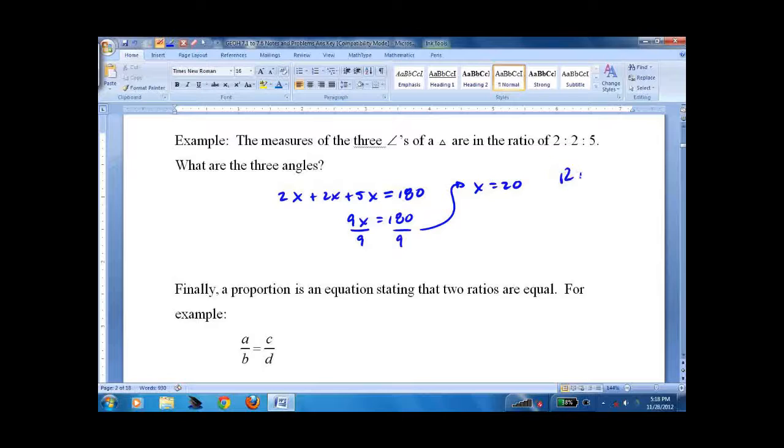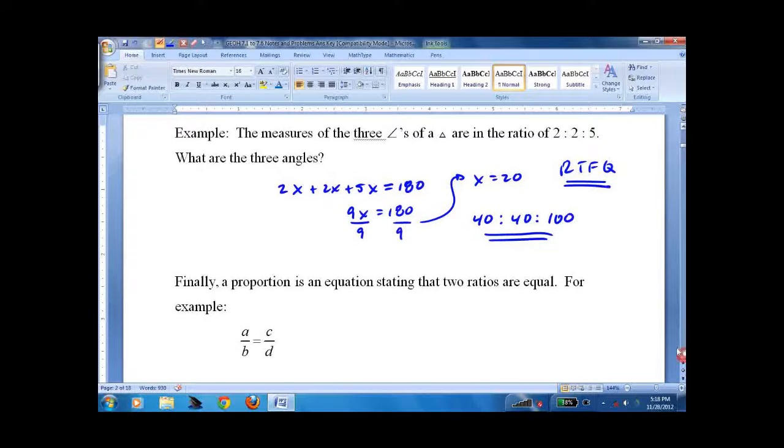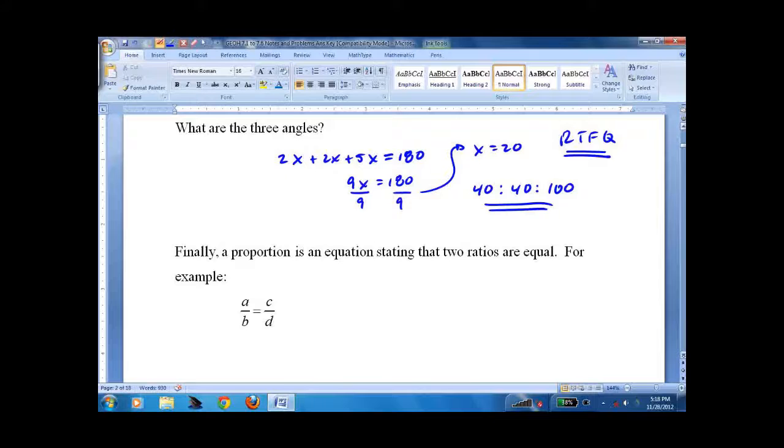And now read the full question. Does x equal 20? Yes. Is that the three angles? No. The angles are 40 to 40 to 100, which, if you notice, adds up to 180. No, you don't have to reduce it because those are the actual angles, so you don't have to reduce them.